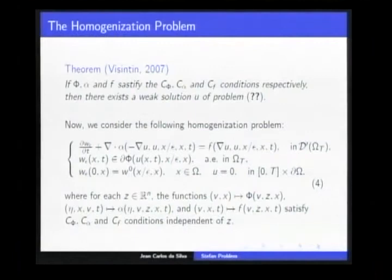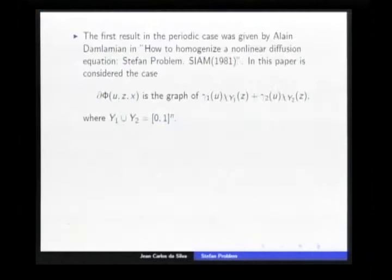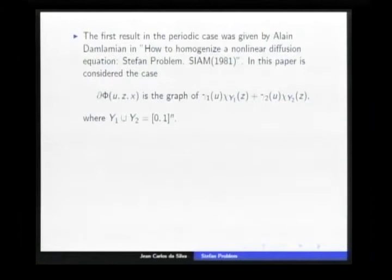Here, the variable z represents the oscillatory variable, and the functions phi, alpha, and f, which depend on z, satisfy the conditions uniformly in z. The first result in that direction, in the periodic case, was given by Dallamiyan, who considered a subdifferential as a graph of a particular type, and his monotonous operator was linear in the first argument.